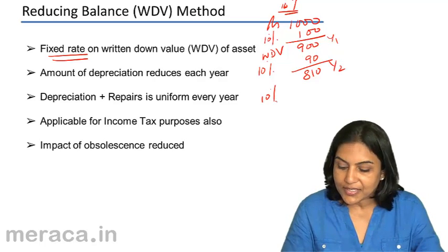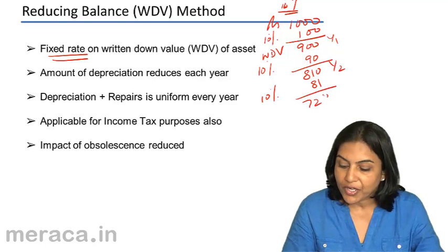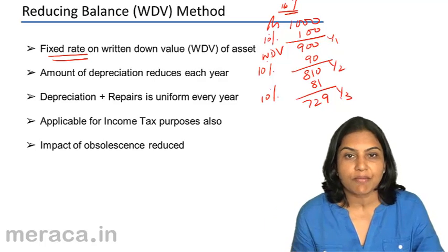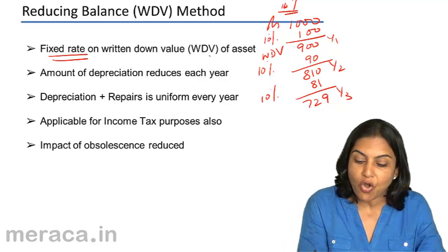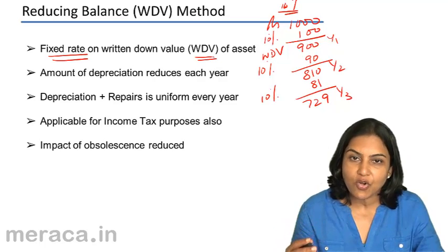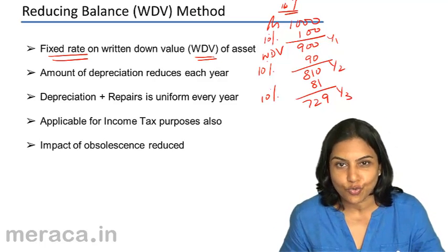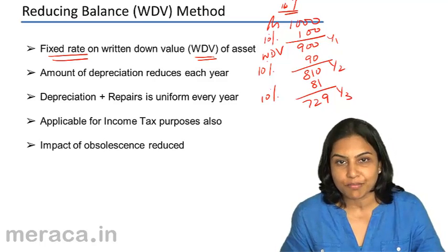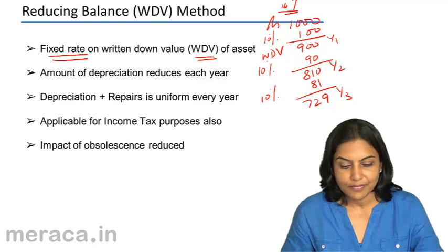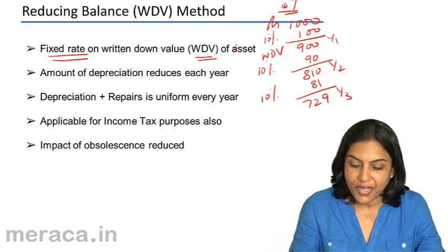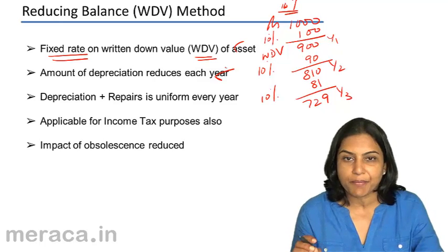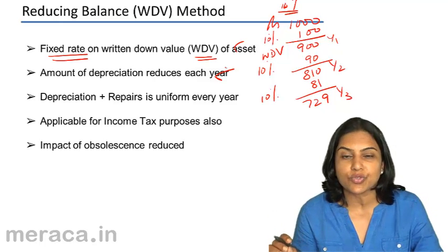Taking one more year: 10% of the written down value of 810 gives 81, so the written down value at the end of year 3 is 729. Under the reducing balance method, we charge a fixed rate of depreciation on the written down value of the asset. Since the written down value goes on reducing as the years go by, the amount of depreciation also goes on reducing. The rate is fixed, but the amount of depreciation reduces each year because it is applied to the reducing balance.